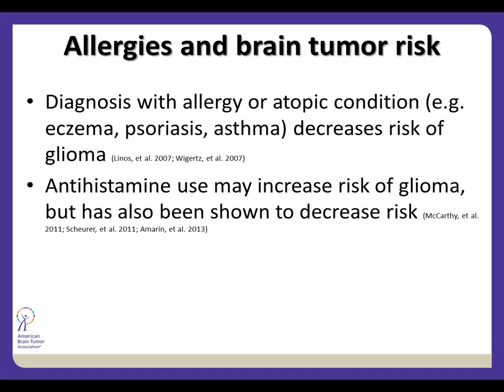What about allergies and brain tumor risk? We have been able to show over and over again that if you have allergies or other allergic conditions like eczema, psoriasis, or asthma, it decreases your risk of glioma. The biological hypothesis behind this is that when you have allergies, your body is in constant surveillance — in a heightened awareness mode — and maybe that heightened state can also eliminate things like the early beginnings of a cancer cell.